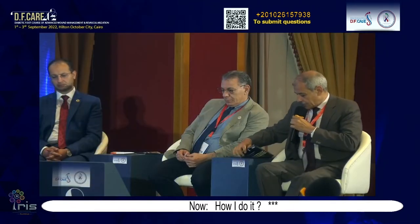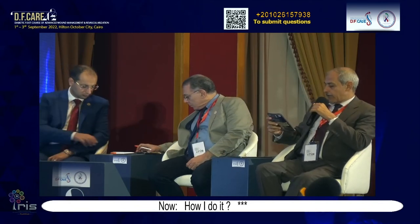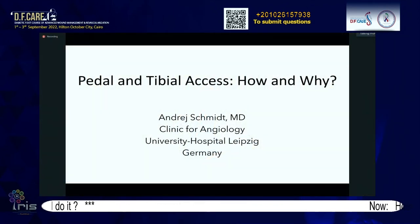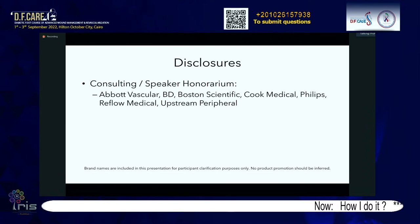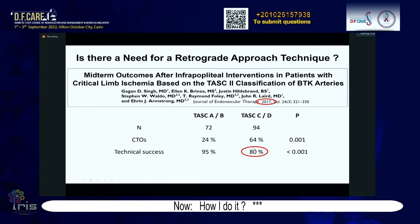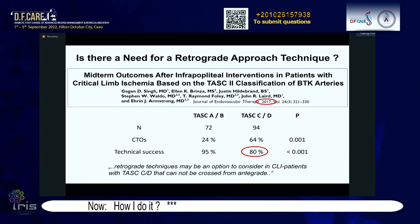Thank you, Dr. Zaid. Now we go back to Germany for Dr. Schmidt, who will talk about pedal and tibial access — how and why. This is something that has interested us for many years. First: do we actually need retrograde approaches? Looking at recent publications on endovascular treatment of infrapopliteal arteries, comparing TASC A/B to TASC C/D lesions, below the knee with TASC C/D there are more total occlusions and technical success is only 80% — meaning every fifth patient is a failure. This is unacceptable, and retrograde technique was discussed as an option.